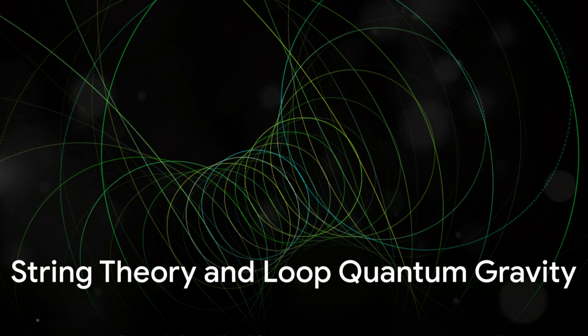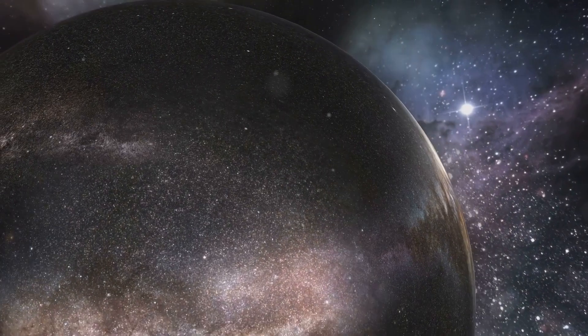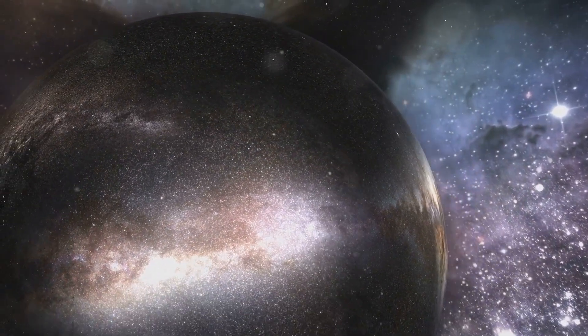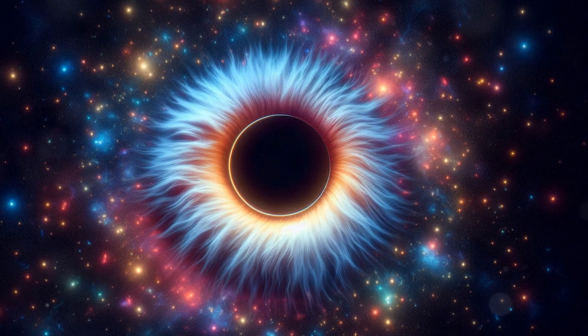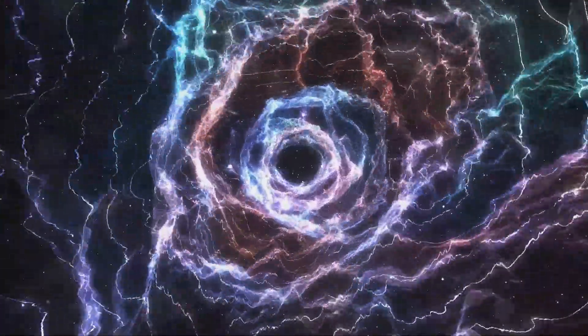Physicists use string theory and loop quantum gravity to probe black holes. These theories aim to unify general relativity and quantum mechanics. String theory suggests black holes might be fuzzy balls of strings. Loop quantum gravity proposes spacetime is quantized into tiny loops.